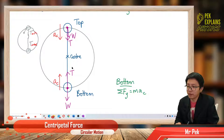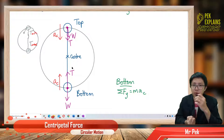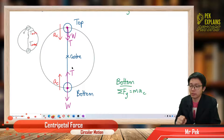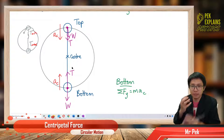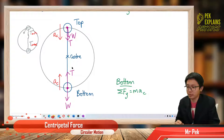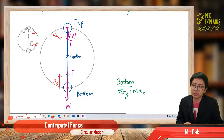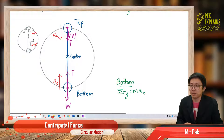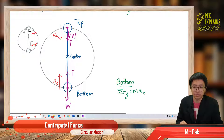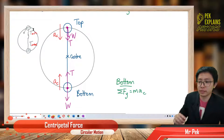At the bottom it's like the string is very taut — being pulled by the weight of the object. It's a very tight string. So at the bottom is normally maximum tension. At the top the object tends to fall down, so the string is not taut — it has minimum tension at the top.